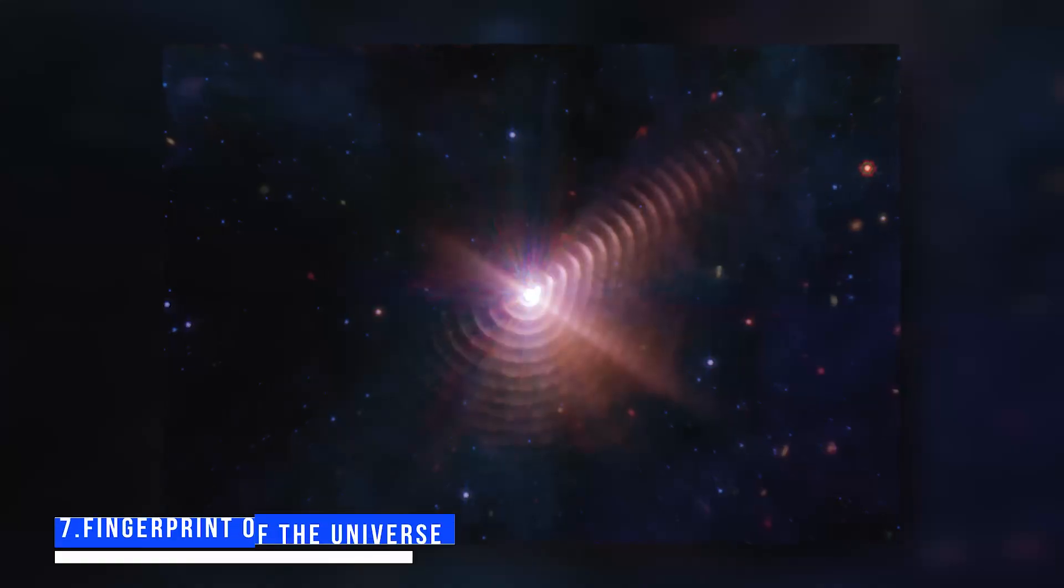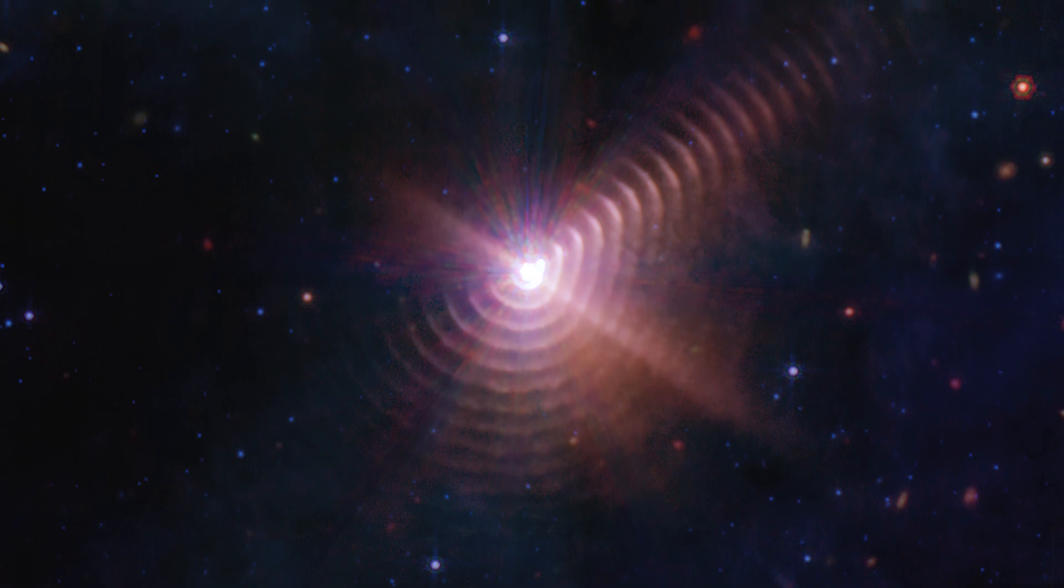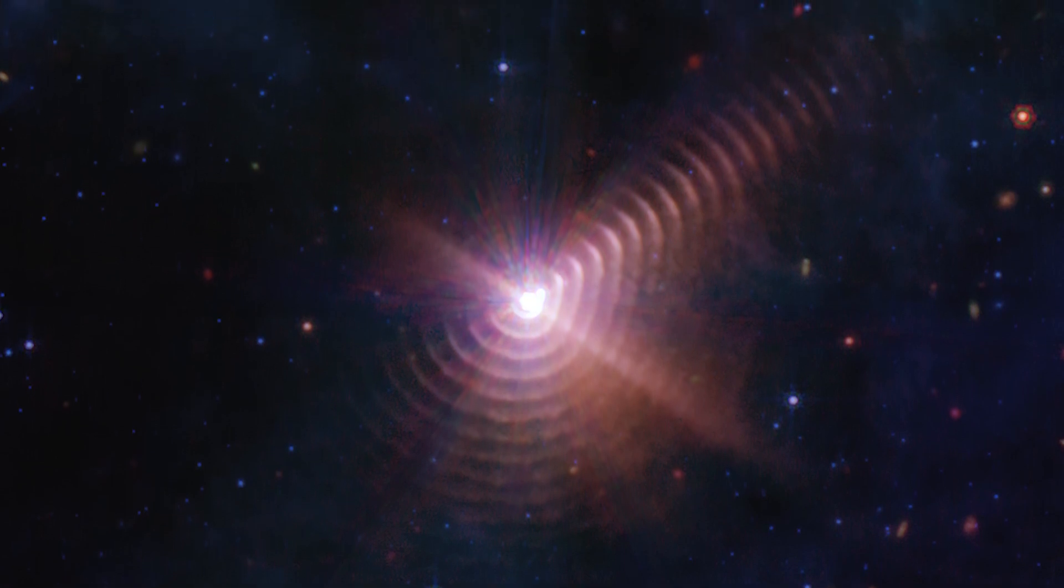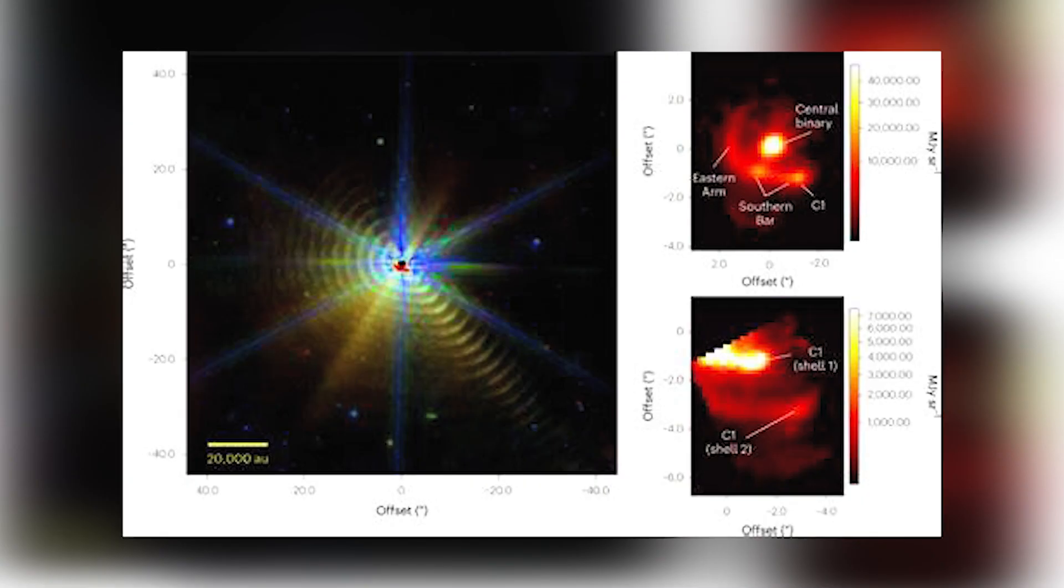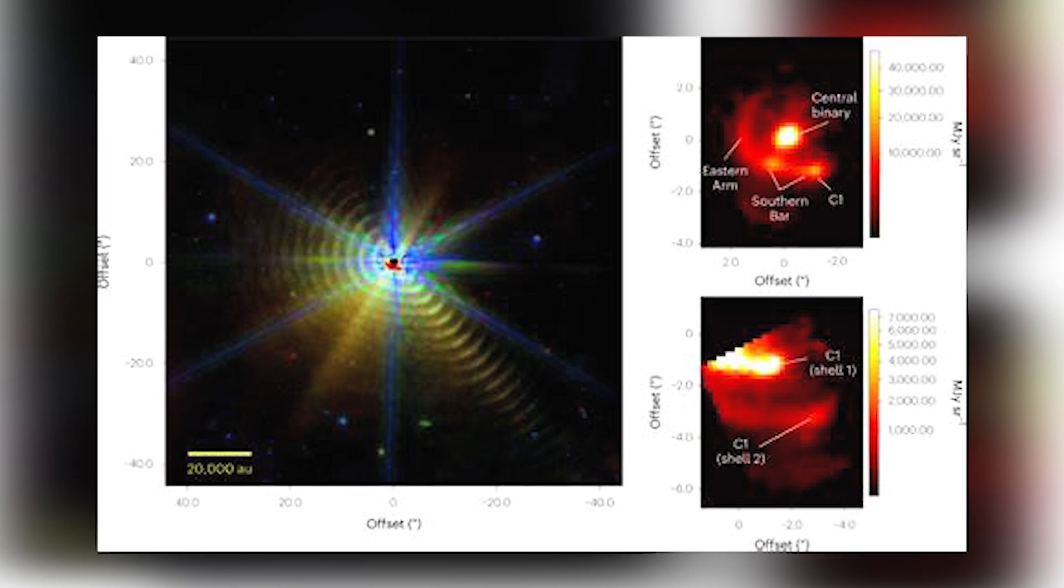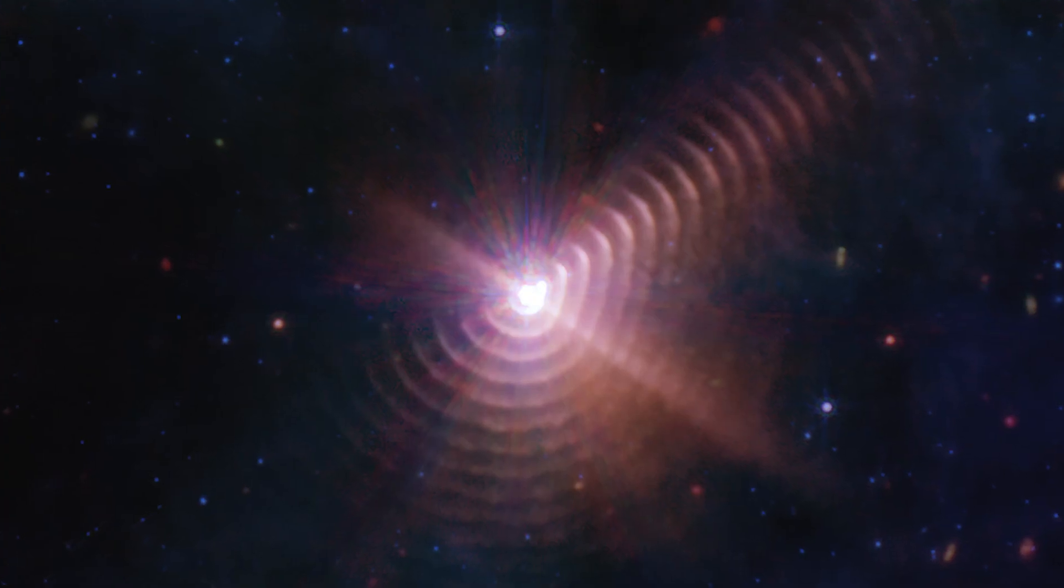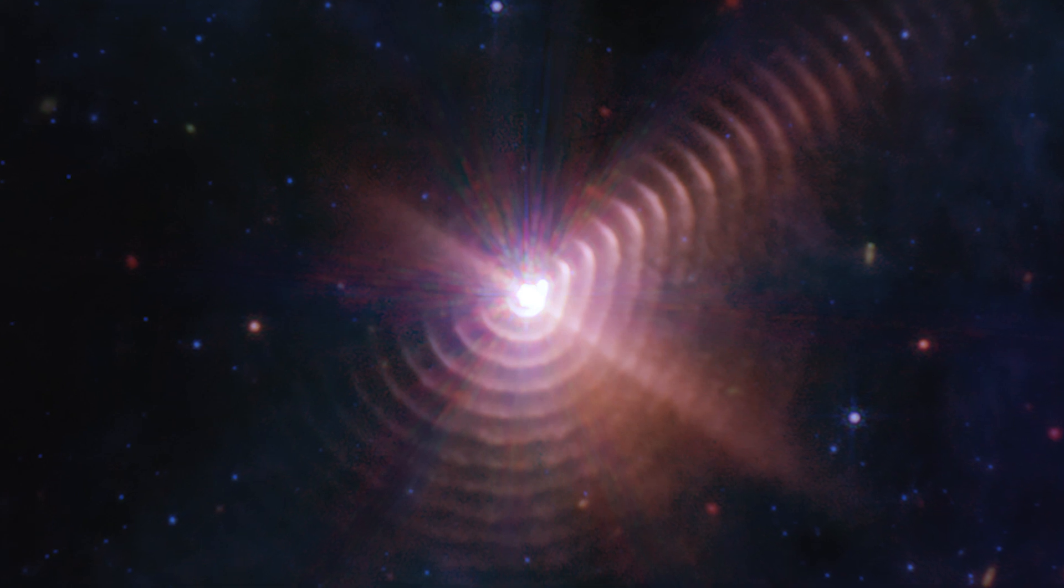Number 7: Fingerprint of the Universe. A Webb image released on October 12th shows dust plume rings produced by violent collisions of two stars more than 5,000 light-years away from Earth. They are commonly known as WR140, or the Wolf-Rayet 140 binary. A Wolf-Rayet star, a type of star with a very short lifespan, is present in the stellar system. When stars are close to one another, they produce dust plumes thousands of times longer than the distance between Earth and the sun every eight years.